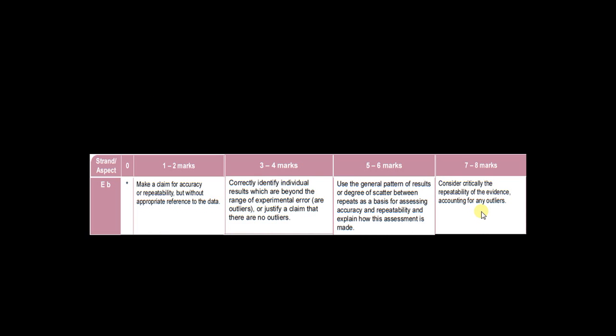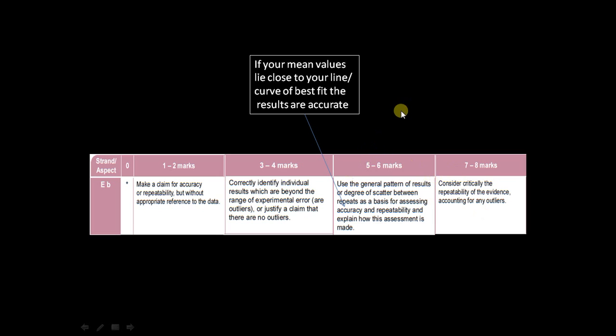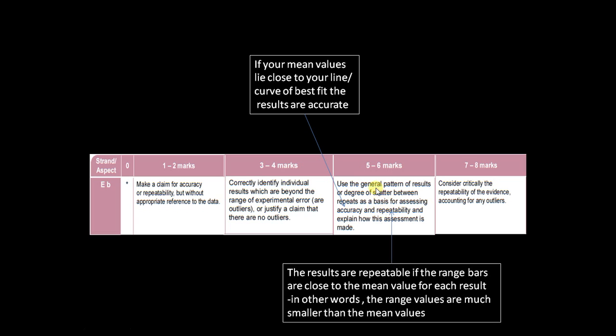Okay, let's have a look at the higher marks here. So your mean values. There's lots of confusion between assessing the accuracy and the repeatability of data. And what we mean by the accuracy is that if the mean values all lie close to the line of best fit or the curve of best fit, then the results are accurate. On the other hand, if the results are repeatable, then the range bars are going to be very small. In other words, each repeat value is close to the mean value.